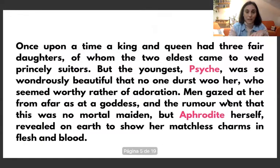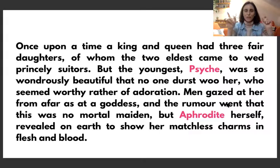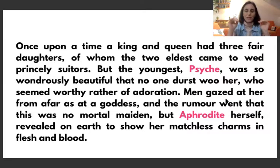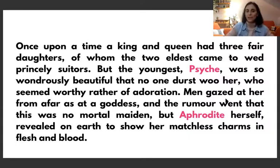Once upon a time a king and a queen had three fair daughters, of whom the two elders came to wed princely suitors. Remember, 'fair' here is related to beauty. 'Once upon a time' is the typical expression we use when telling stories. 'To wed' is coming from 'wedding,' so the two elder daughters came to wed princely suitors.